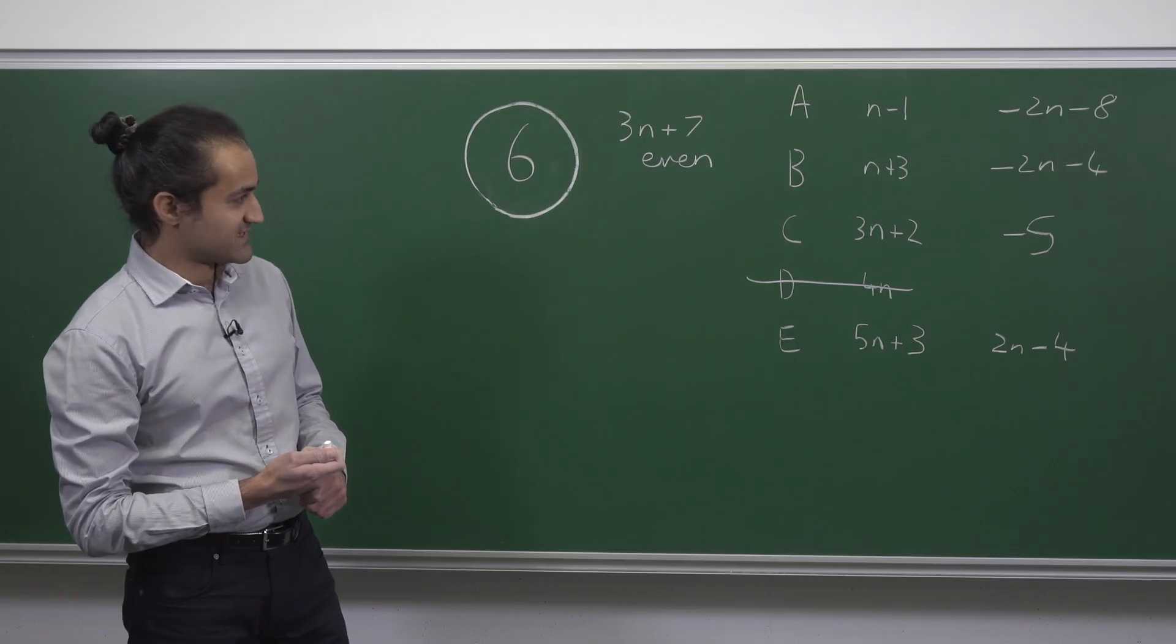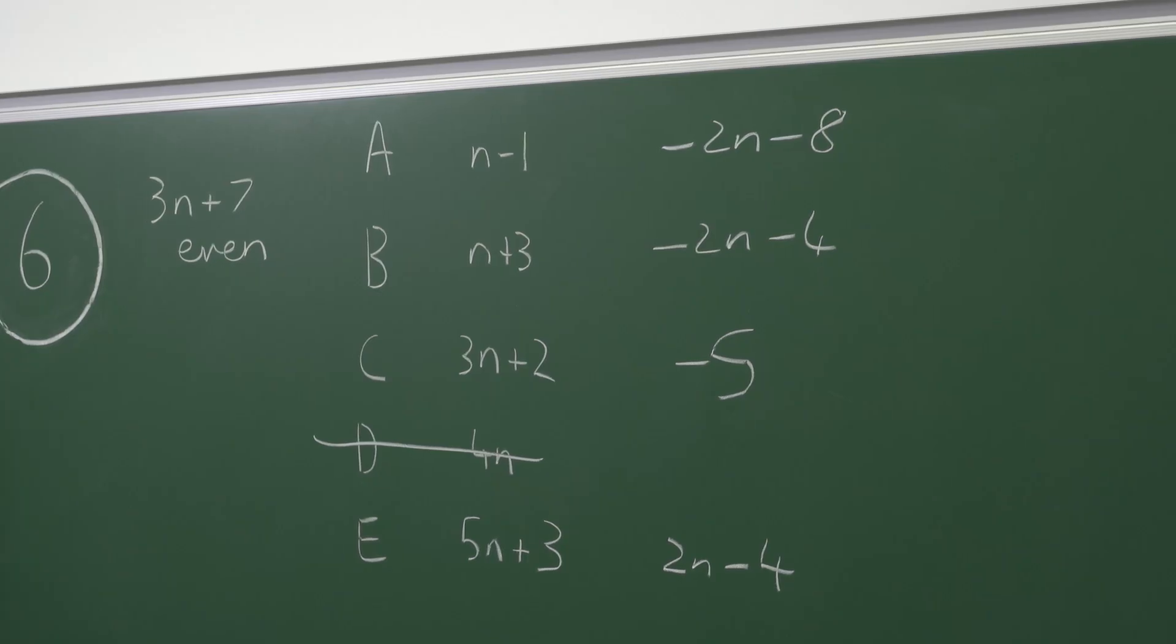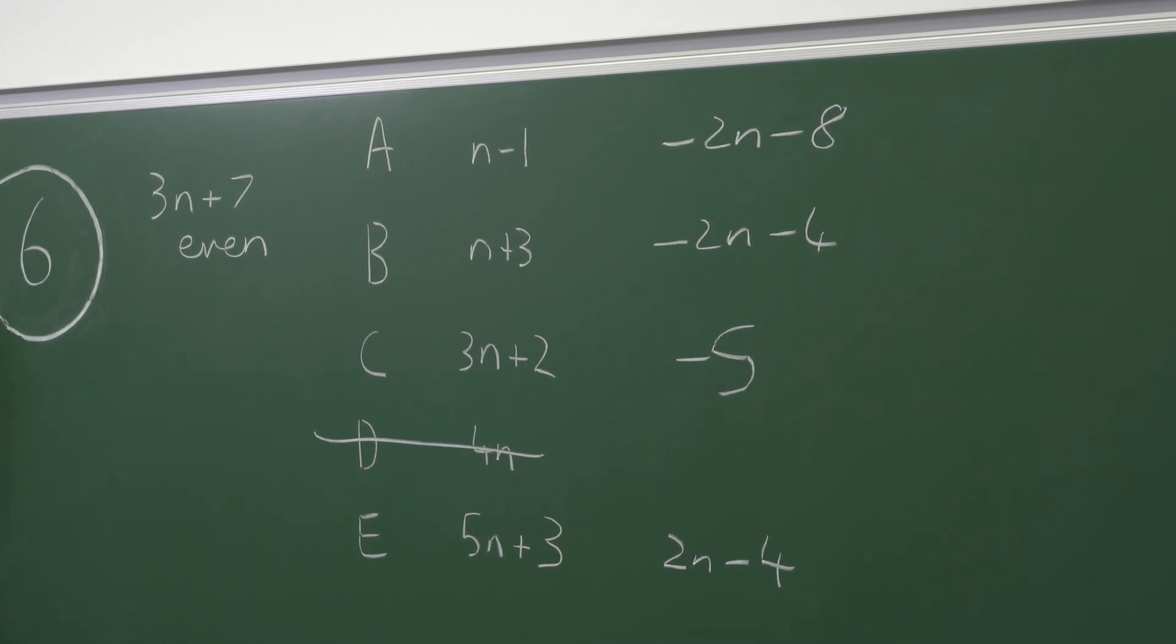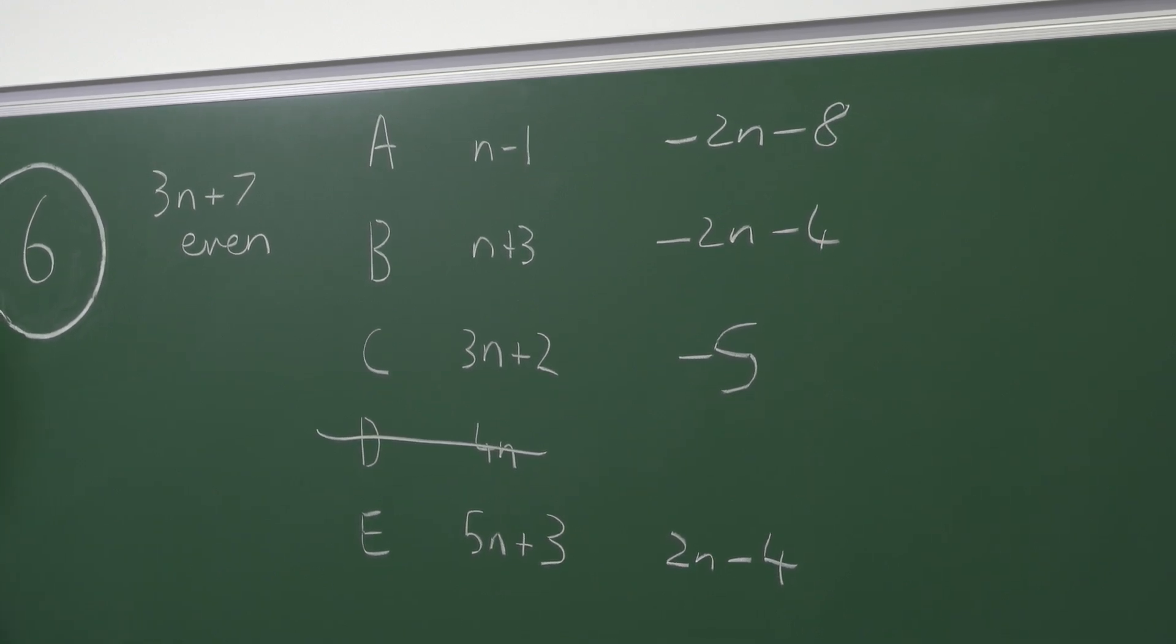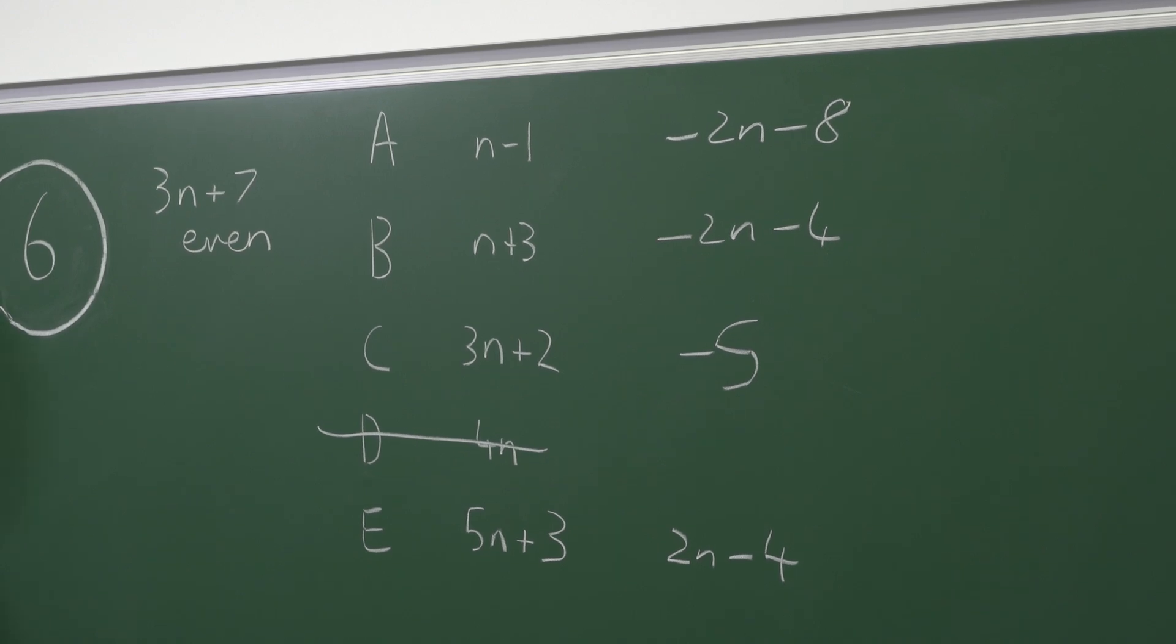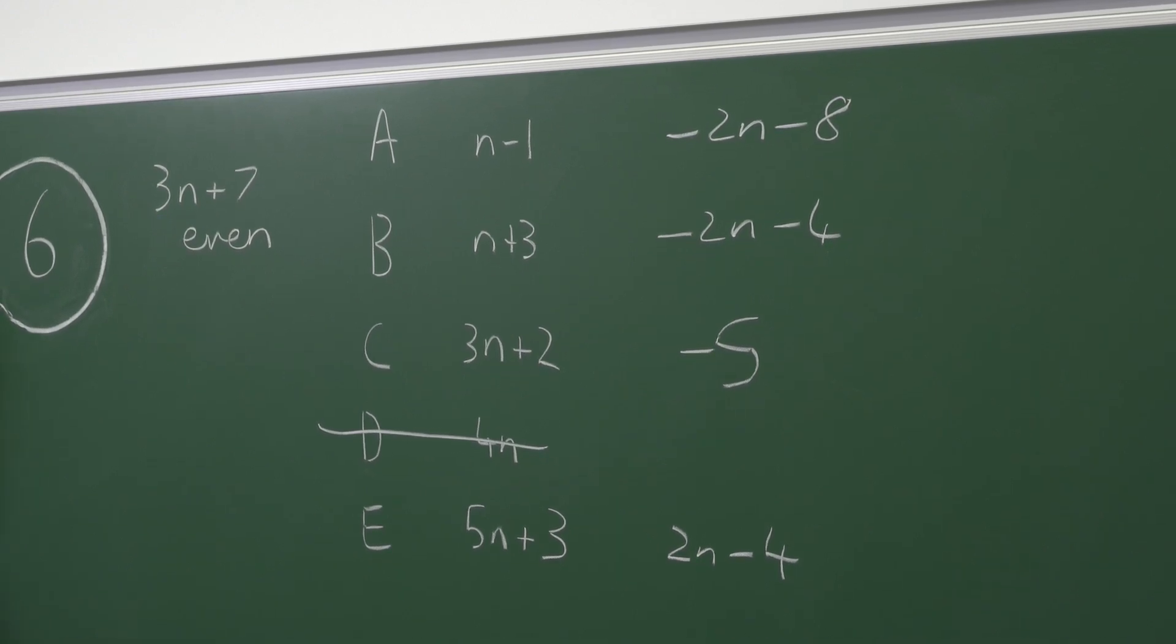Of these four differences, minus 2n minus 8, minus 2n minus 4, and 2n minus 4 are all even. So a, b, and e all have an even difference from an even number, and therefore they are all even.